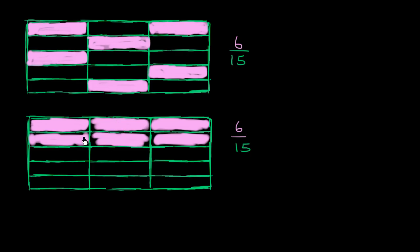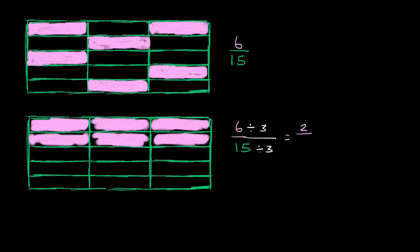But how can I simplify this even more? When you look at it numerically, you see that both 6 and 15 are divisible by 3. In fact, their greatest common factor is 3. So what happens if we divide the numerator and the denominator by 3? If we do the same thing to the numerator and the denominator, we're not going to be changing the value of the fraction. So let's divide the numerator by 3 and the denominator by 3, and we get 2 over 5.